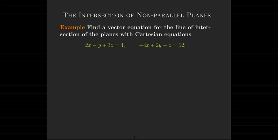Let's find a vector equation for the line of intersection of the planes 2X minus Y plus 3Z equals 4 and negative 4X plus 2Y minus Z equals 12. These planes are not parallel: if I multiply the first by negative 2 to match the X coefficient, I'd get negative 4X plus 2Y minus 6Z, which doesn't match the Z coefficient of negative Z in the second plane.